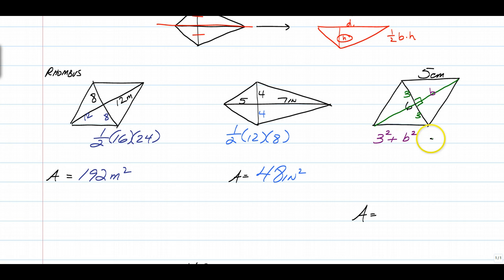3 squared plus B squared is equal to 5 squared. After you solve using the Pythagorean theorem, you'll find out that it's 4 for B. So this guy is 4 and this guy is 4. So now you have both diagonals and you're ready to answer this question.